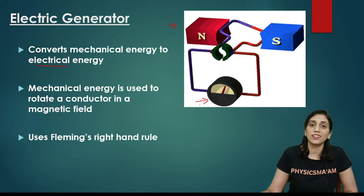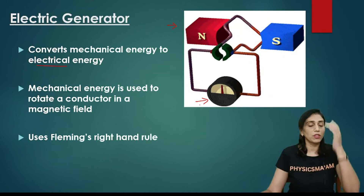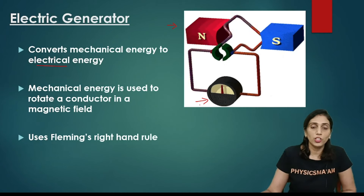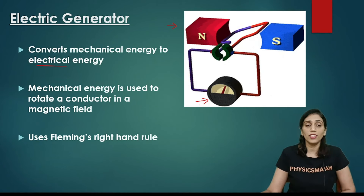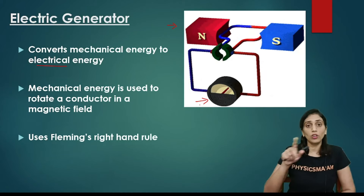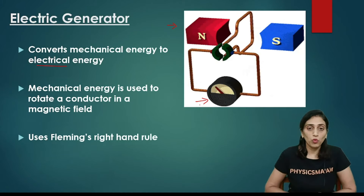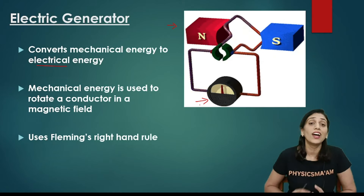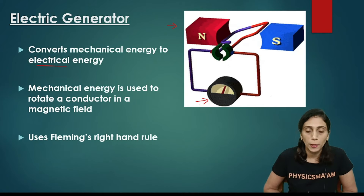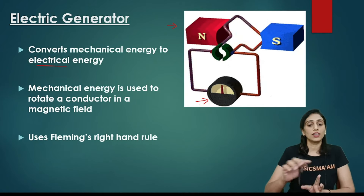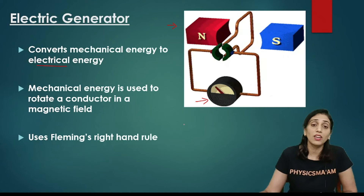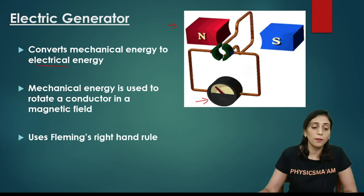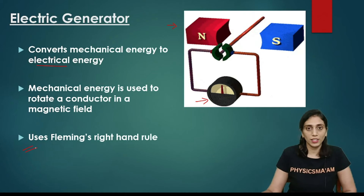The current is induced. So the generator is something which converts mechanical energy into electrical energy, and that mechanical energy is used to rotate the conductor. Magnets are not easy to move, so generally we move the conductor inside the magnetic field. We will see how it works in the next diagram, and the direction of current we will determine by using Fleming's right-hand rule.